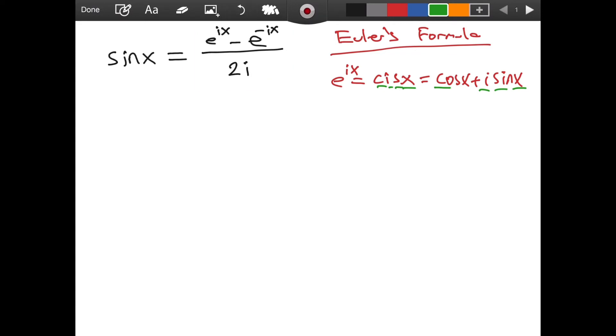We already have e raised to the power of ix, but as you can see, we need the negative as well. So let's calculate, what is e raised to the power of negative ix? We can think of it as e raised to the power of i times negative x. So we will have cosine of negative x, plus i sine of negative x.